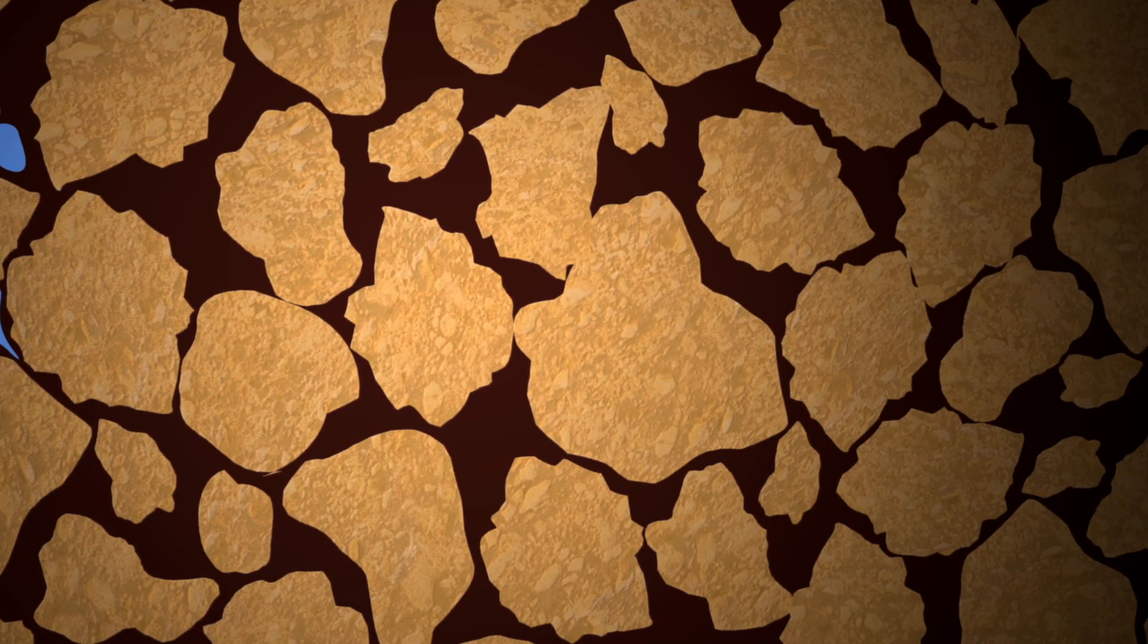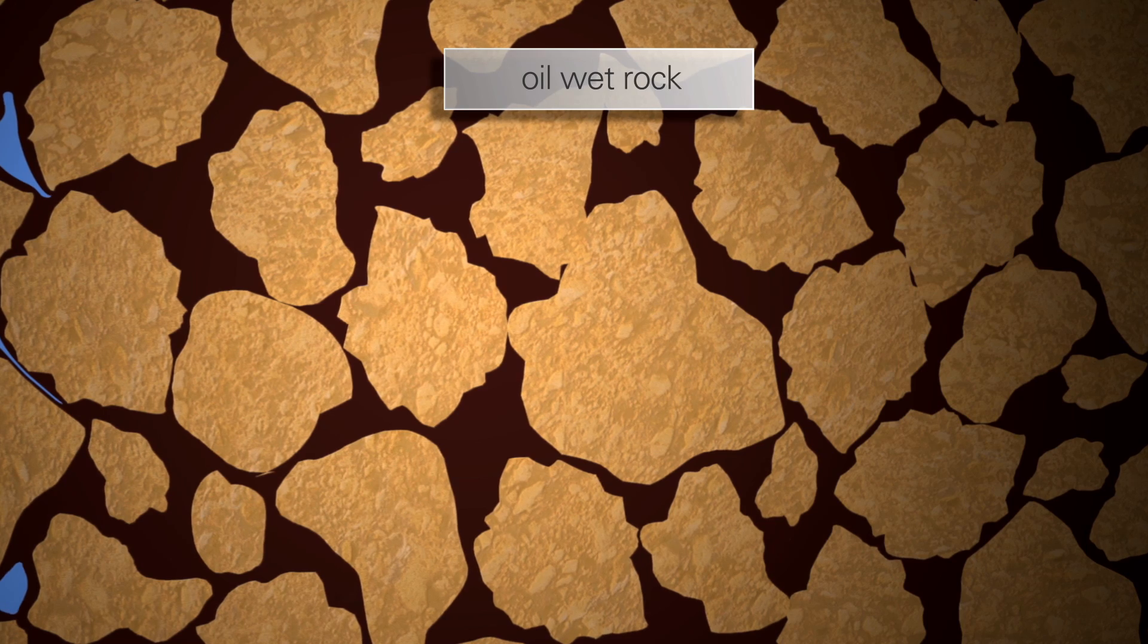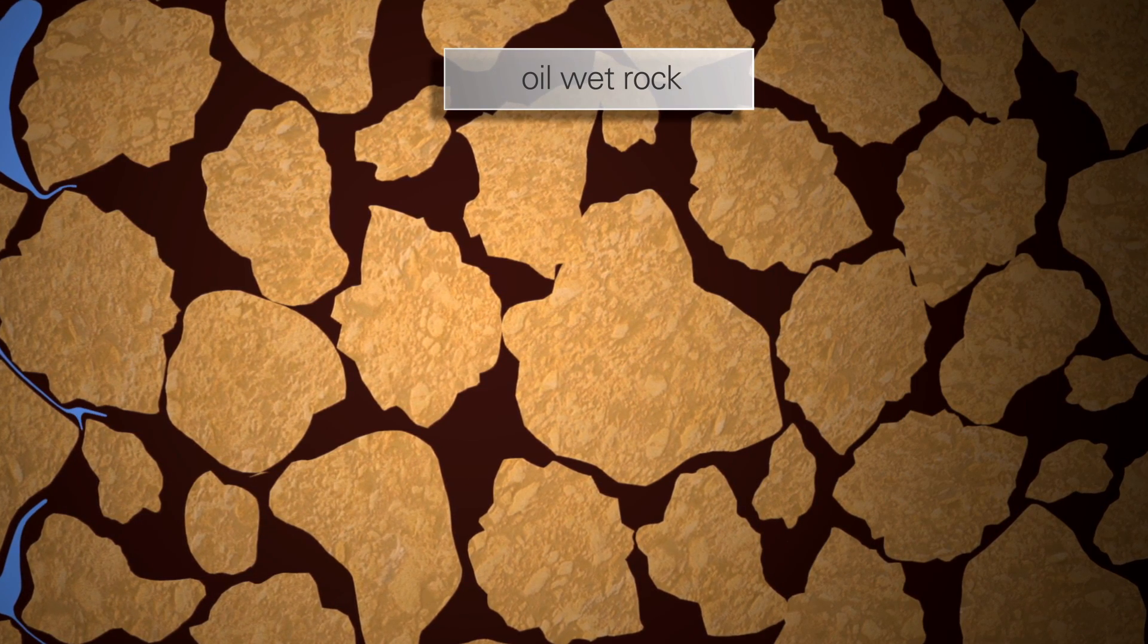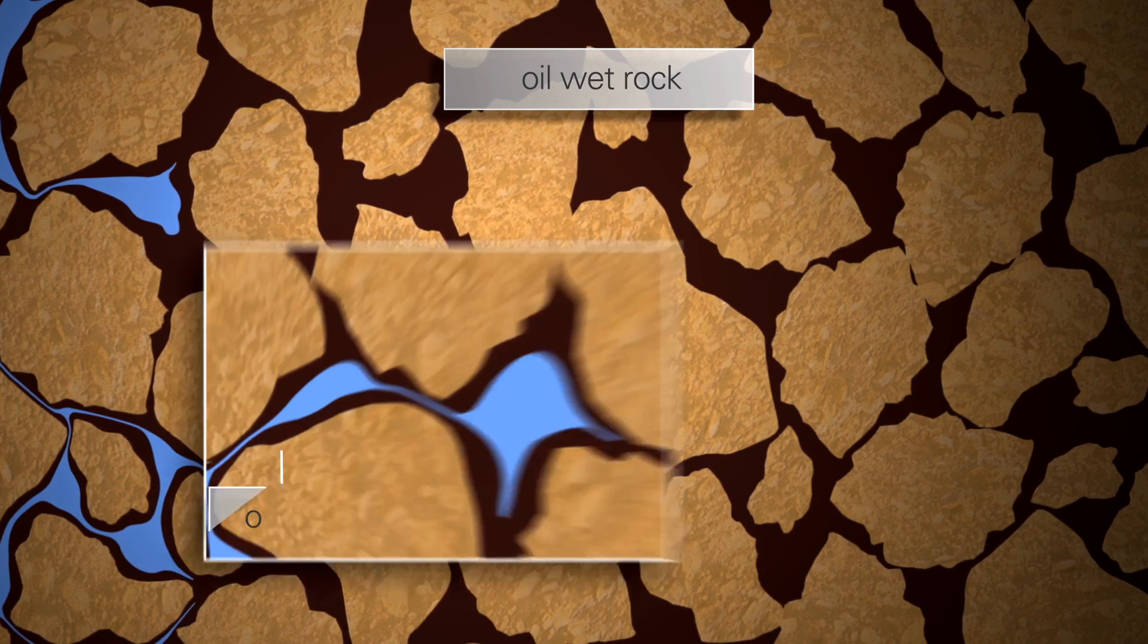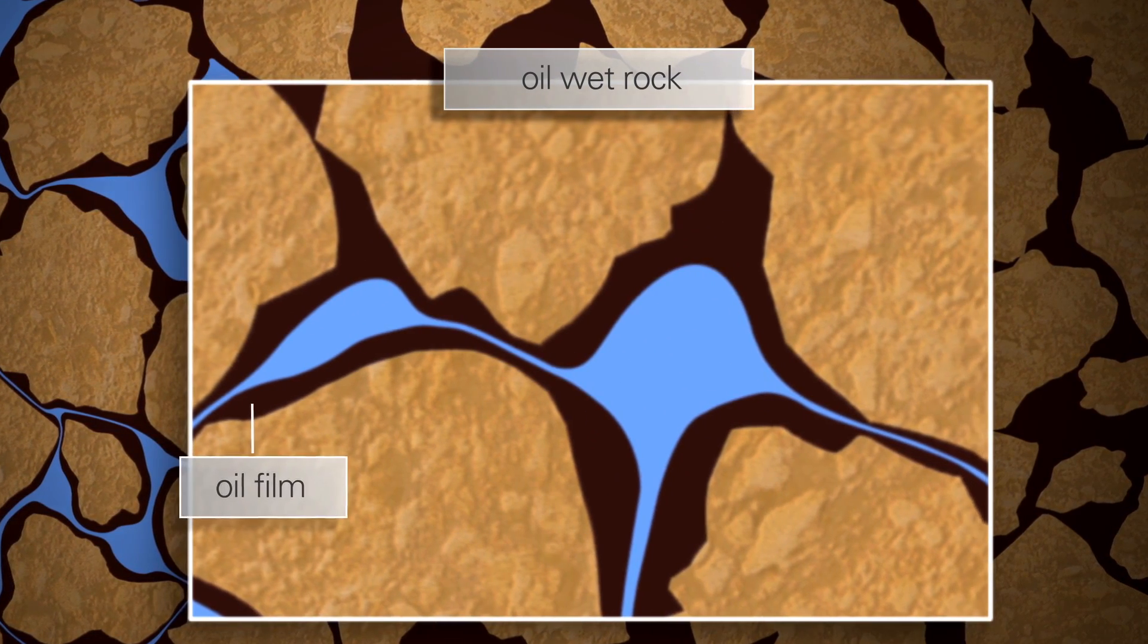In the second example, water comes in contact with oil-wet rock. This happens when the rock attracts oil and repels water, so a thin film of oil coats the sand grains.